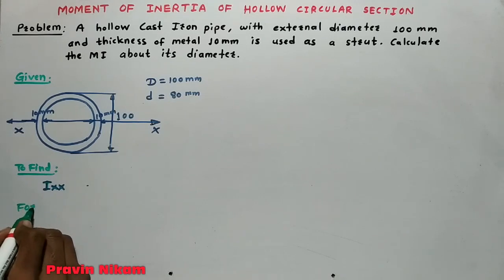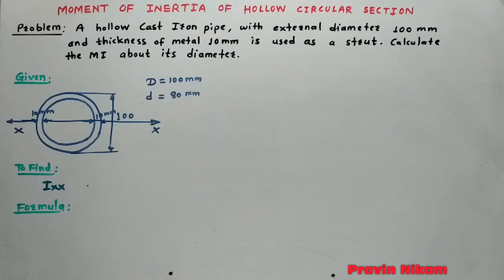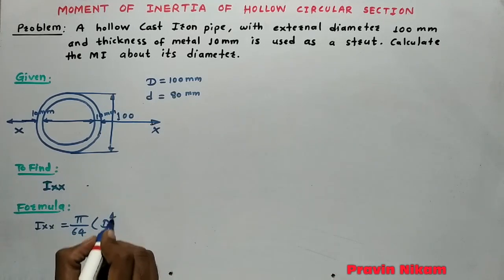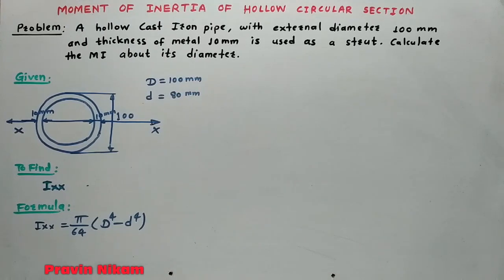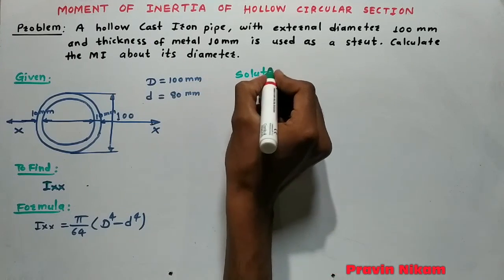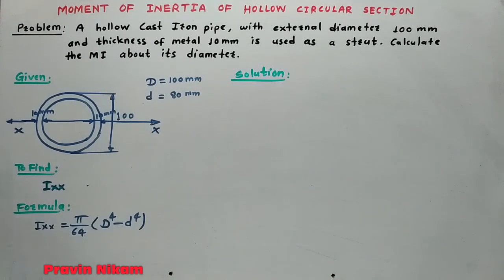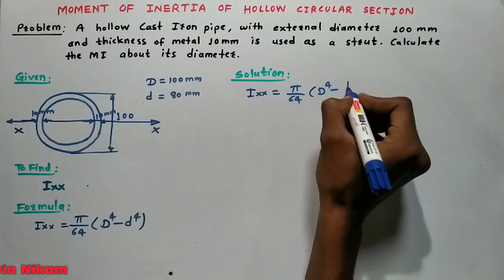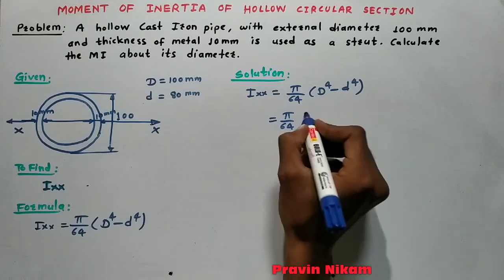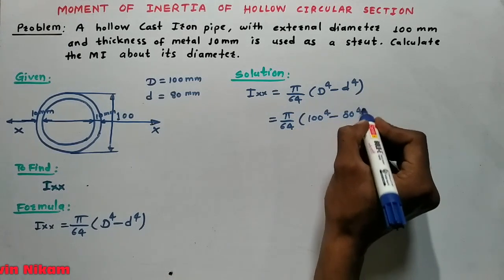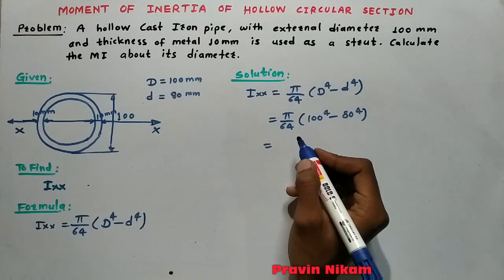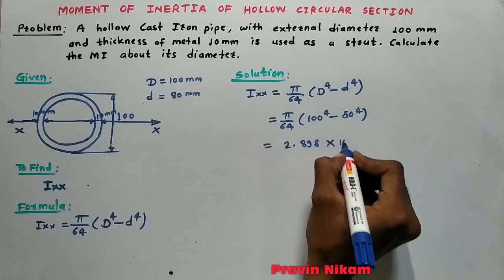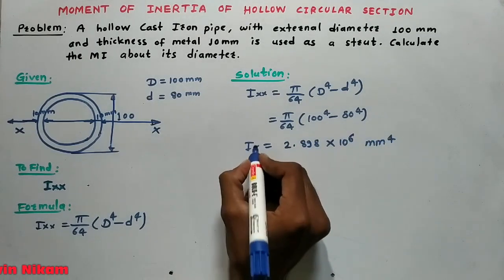We use the formula for moment of inertia about the centroidal axis for a hollow circular section: Ixx = π/64 × (D⁴ − d⁴). Substituting values: Ixx = π/64 × (100⁴ − 80⁴), which gives 2.898 × 10⁶ mm⁴.